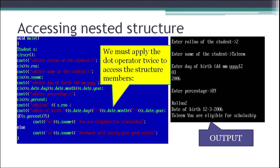When accessing a nested structure, we need to apply the dot operator twice. We write s (the main structure variable name), then date (the nested structure variable name), then the element name — day, month, or year. For example, to access month we write s.date.month. We follow the order of their appearance: s then date then month.